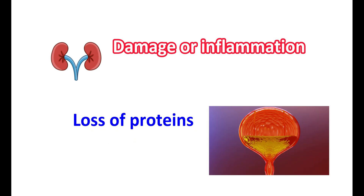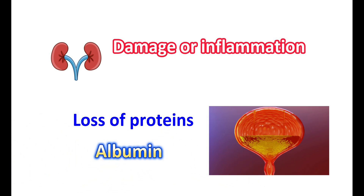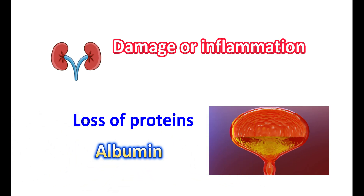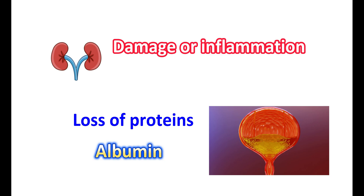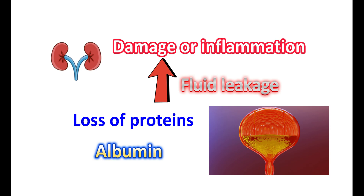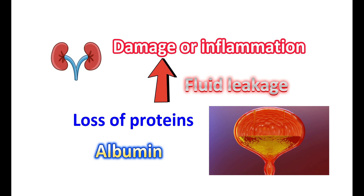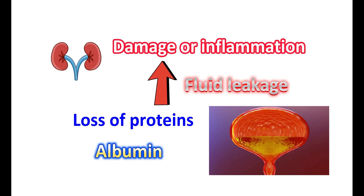In a few people, damage or inflammation to the kidney may result in the loss of proteins in the urine. This reduces the levels of proteins in the blood, like albumin. Albumin plays an important role in binding with many lipid components in the blood, which prevents the leaking of fluids into the tissues. When albumin levels are reduced, it results in more fluid leakage, leading to an increased risk of edema formation.